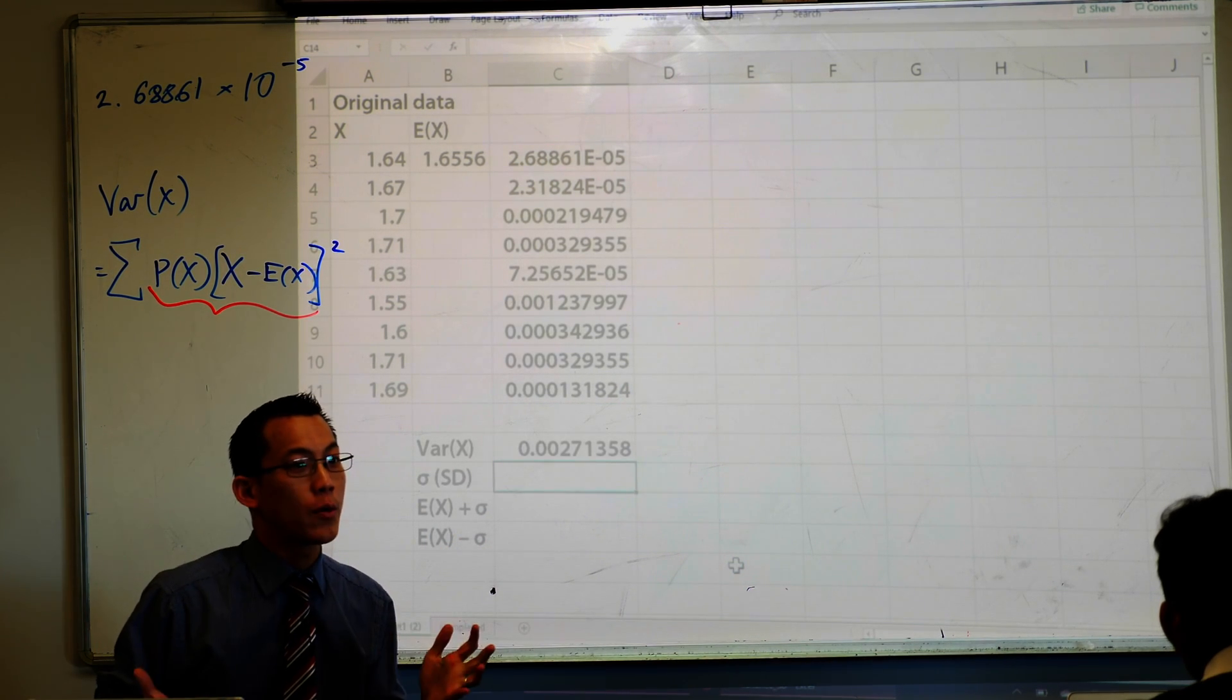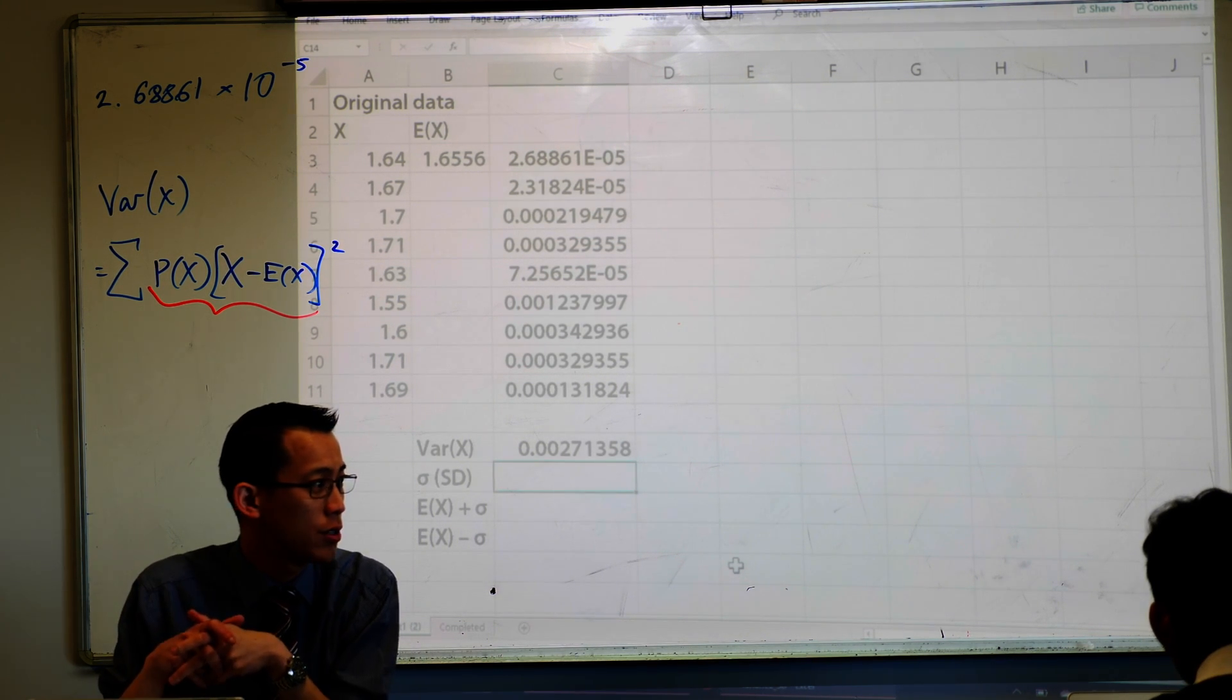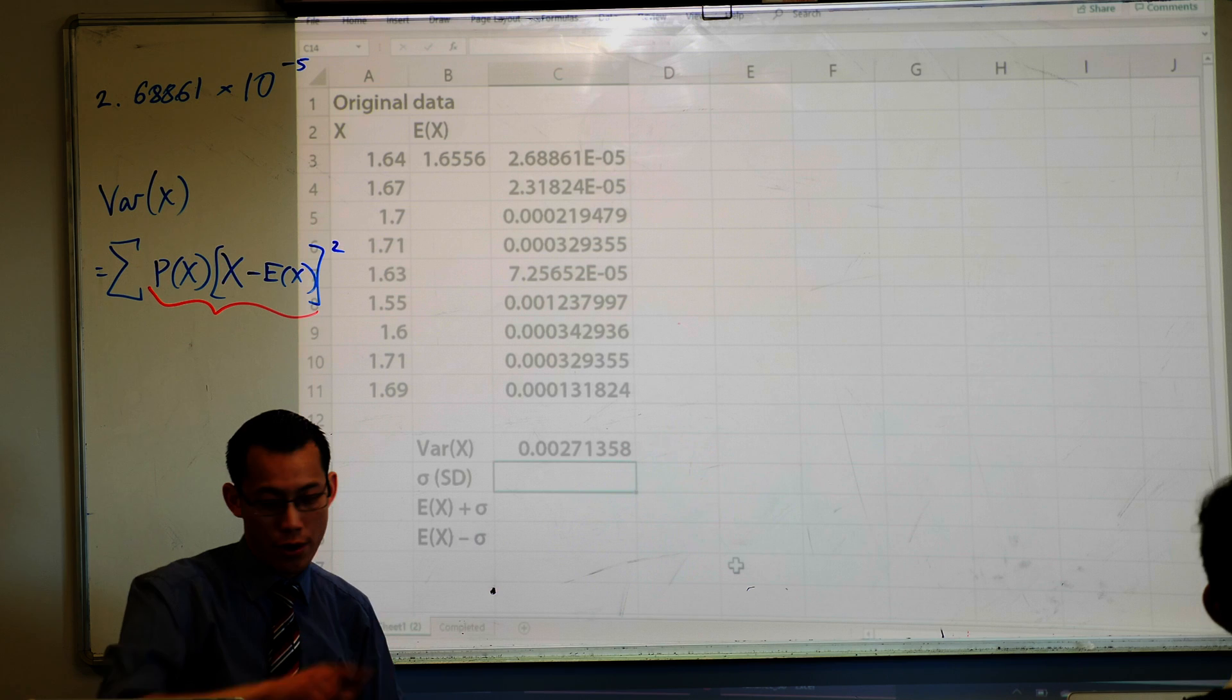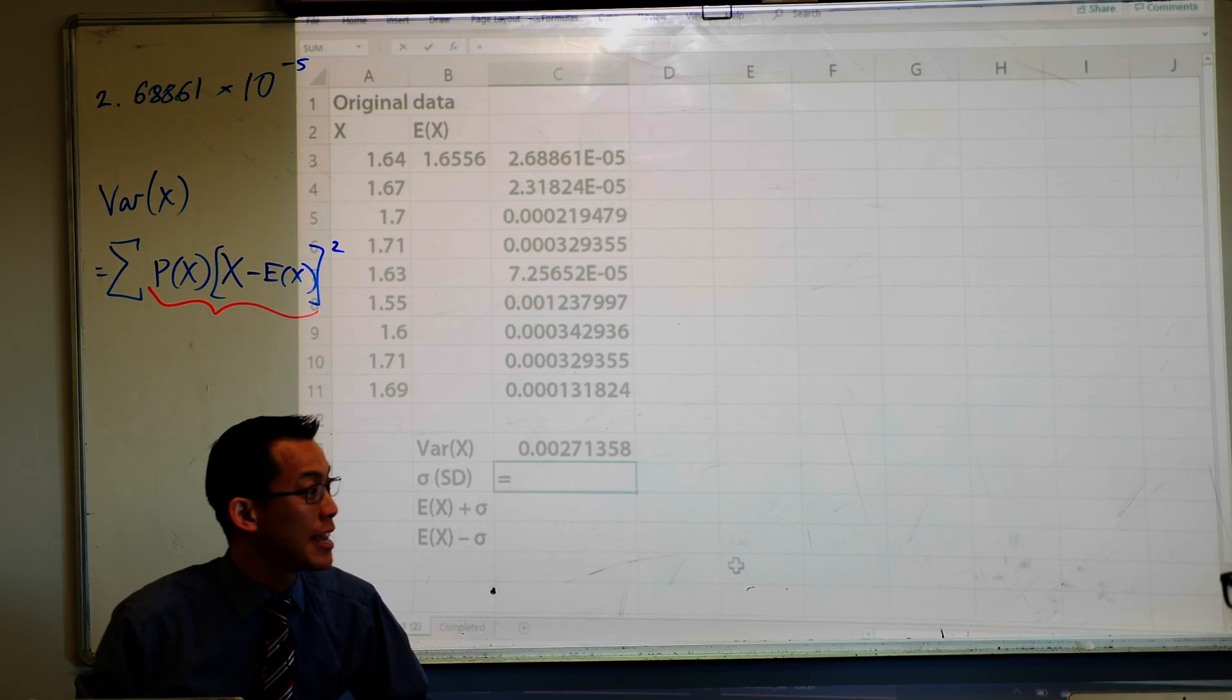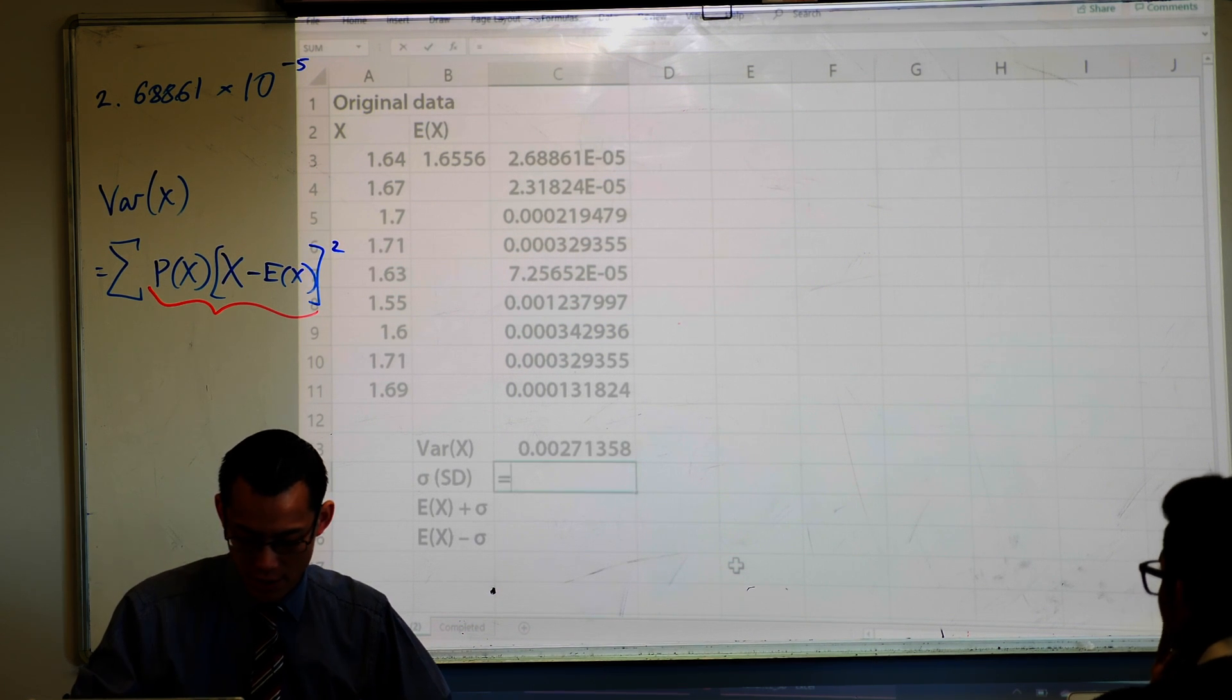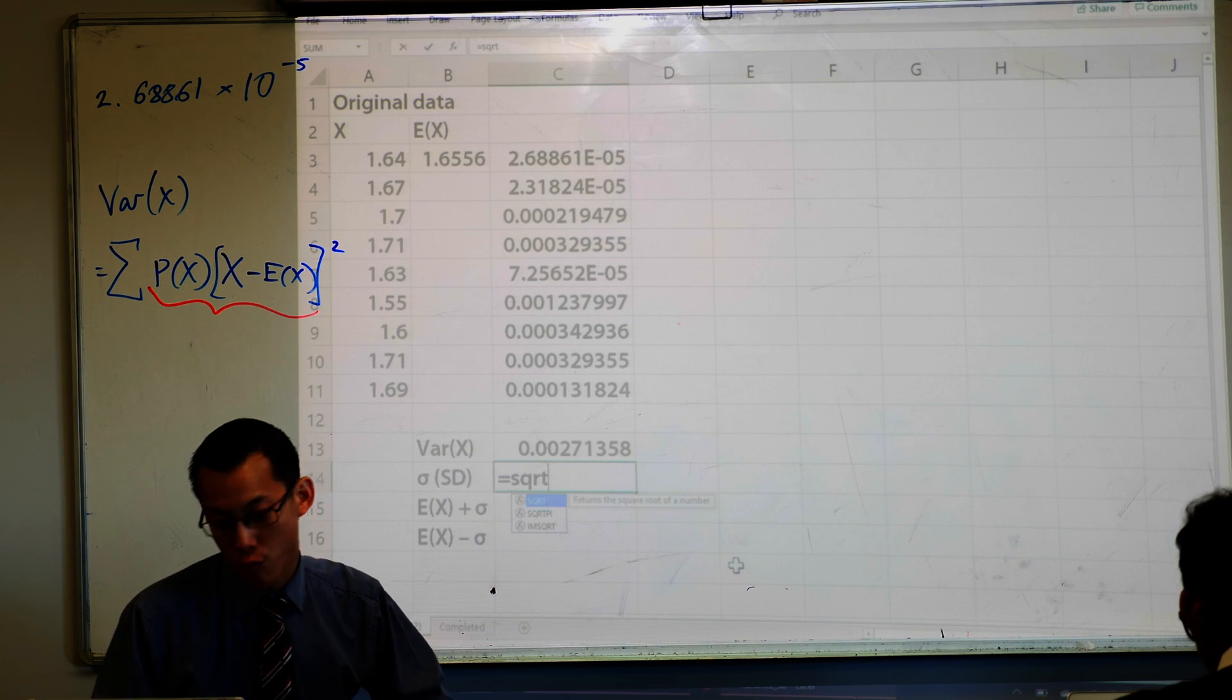Alright, we've done most of the legwork now. This is the hard part. How do we go from variance to standard deviation? What do we do? Take the square root, right? So there's no square root button on our keyboard, so type an equals. To get a square root, you use the abbreviation that Excel has, which is SQRT, square root.